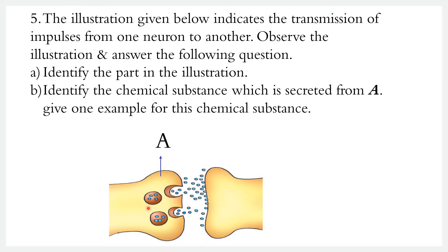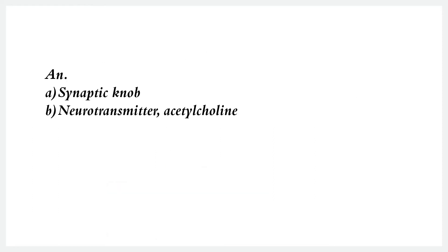Identify the part in the illustration. The answer is neurotransmitters. Neurotransmitters are the chemicals produced at the synaptic nerve. Examples of neurotransmitters are acetylcholine and dopamine.